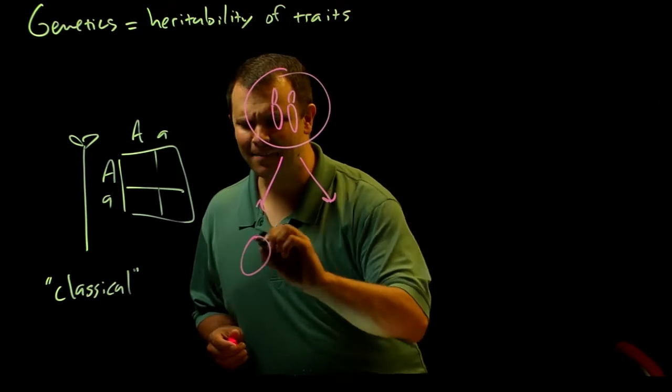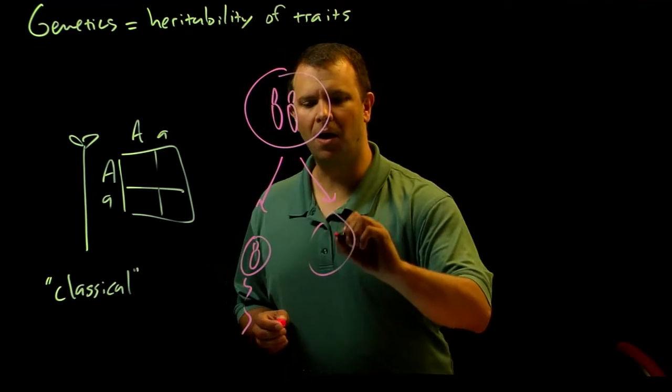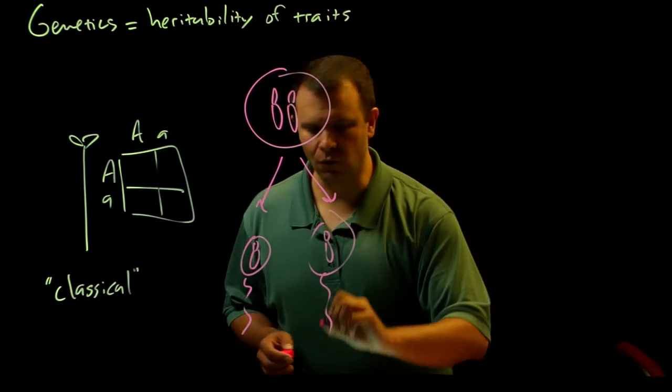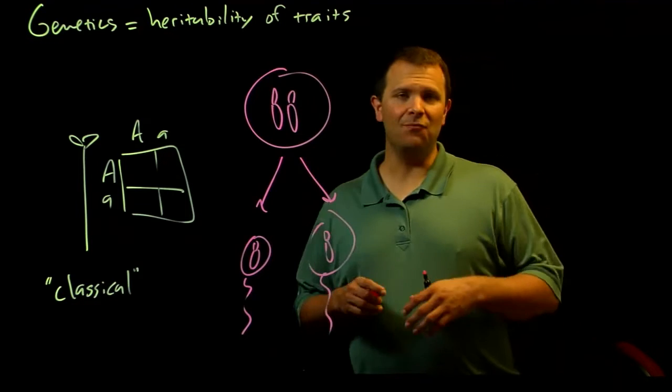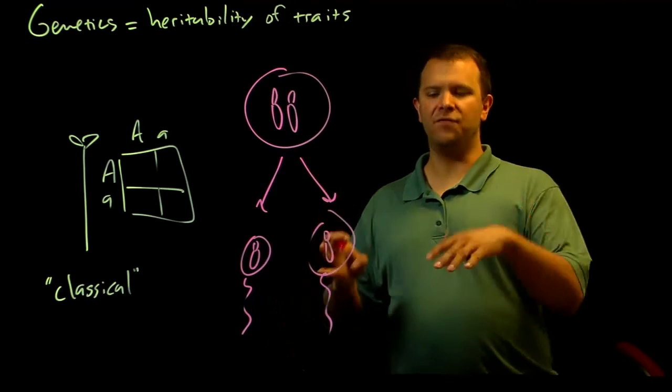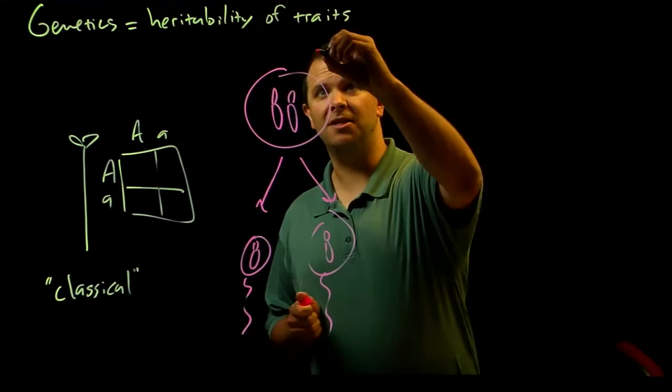then the gametes that that organism produces only get one copy or one version. And so we call this kind of view of genetics transmission genetics or chromosomal genetics.